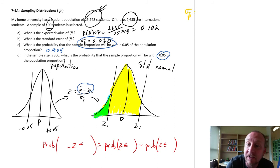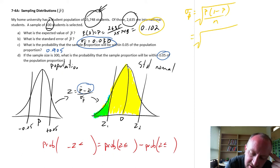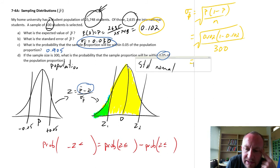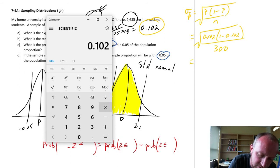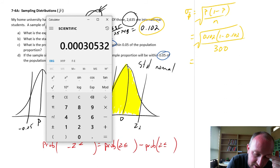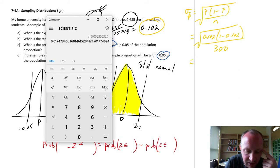So that new standard error is going to be still p times 1 minus p over n. Those proportions haven't changed. That's our population proportion, 0.102 times 1 minus 0.102. And now here's where that 300 shows up. So 0.102 times 1 minus 0.102 equals, divided by 300 equals, and then we'll take the square root, and I have 0.017.